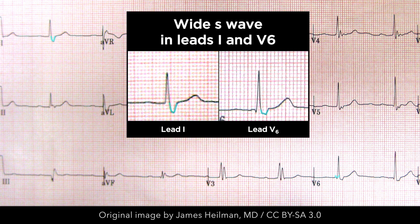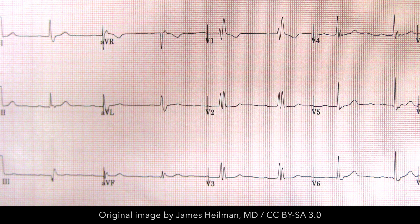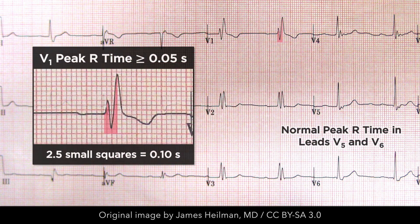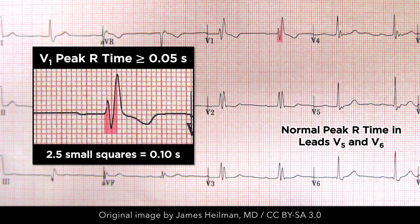The QRS complexes in left-sided leads have a broad or slurred S-wave, which is greater in duration than the preceding R-wave. The peak R-time in lead V1 is greater than 50 milliseconds, but normal in leads V5 and V6.